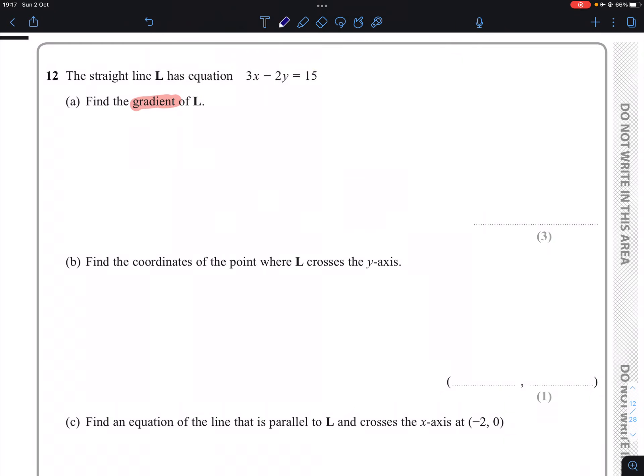In order to be able to quote the gradient of a straight line, it must first be written in y = mx + c form, where m stands for the gradient. So whatever number multiplies by x when y is on its own, that's going to be your gradient.